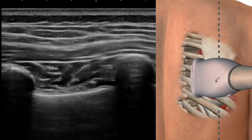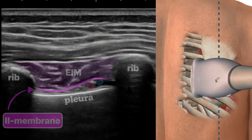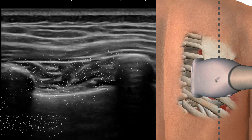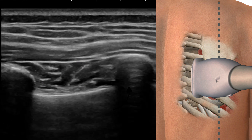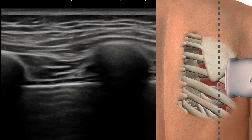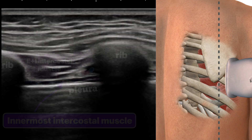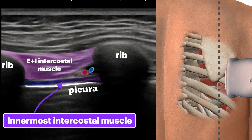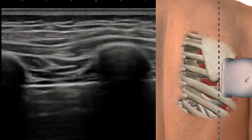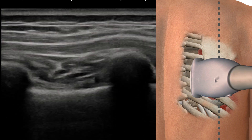We can see this change when we scan the posterior chest wall. In the initial medial view, the neurovascular bundle is adjacent to the pleura — note that we can't say for sure where the nerve is. As we move laterally, we pick up a very thin, dark layer deep to the vessels: this is the innermost intercostal muscle. And as we slide medial again, we lose it.